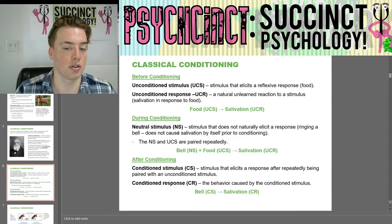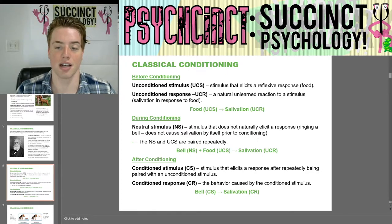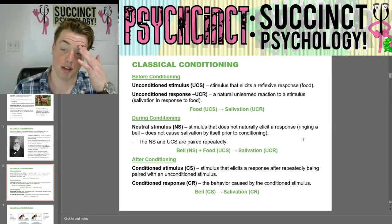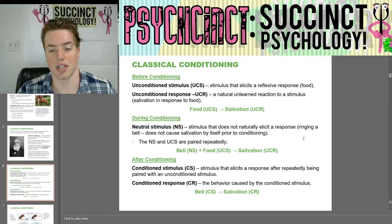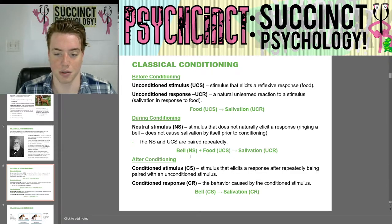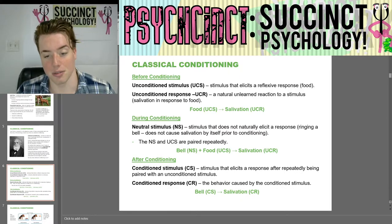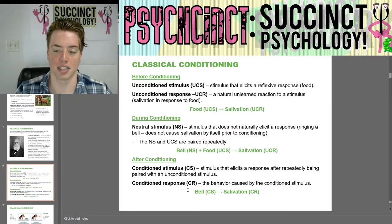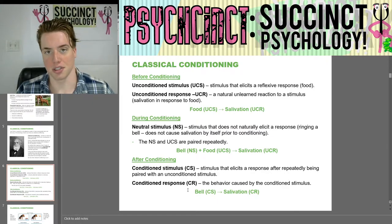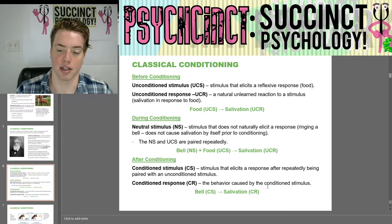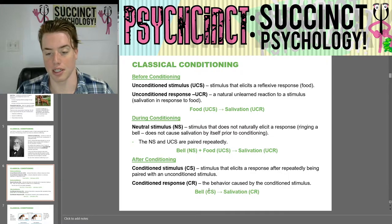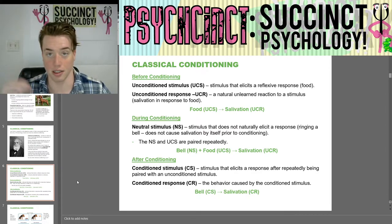During conditioning, there's a neutral stimulus (NS) — a stimulus that does not naturally elicit a response. In Pavlov's case, ringing a bell does not cause salivation by itself prior to conditioning. The neutral stimulus and unconditioned stimulus are paired repeatedly to produce salivation. After conditioning, the conditioned stimulus (CS) is a stimulus that elicits a response after repeatedly being paired with an unconditioned stimulus, and the conditioned response (CR) is the behavior caused by the conditioned stimulus. So after conditioning, the bell triggers salivation because the dog has associated the ringing of the bell with food.